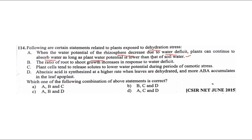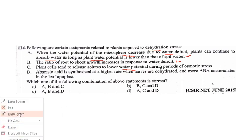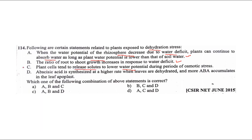The ratio of root to shoot growth increases - yes, we studied this. Plant cells tend to release solutes to lower the water potential during osmotic stress - this is wrong. Plants do NOT release solutes; instead they synthesize solutes named as compatible solutes.